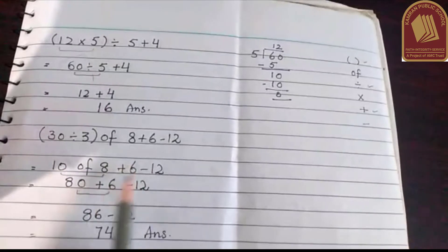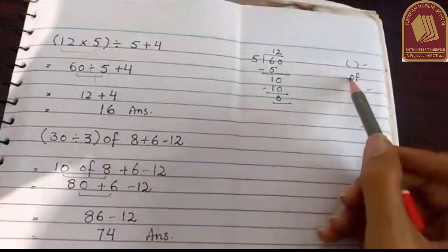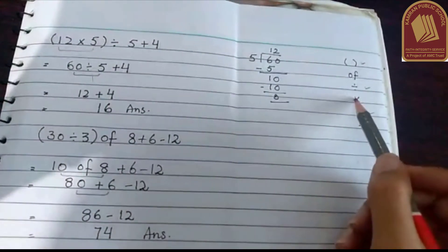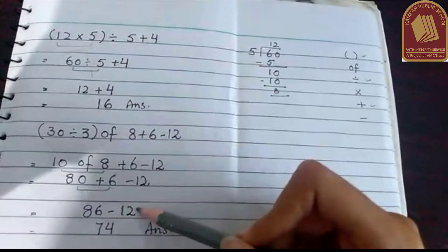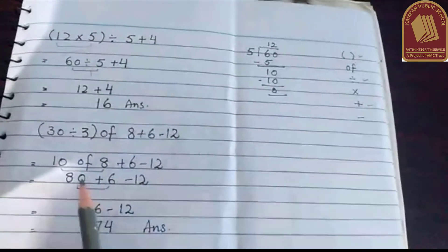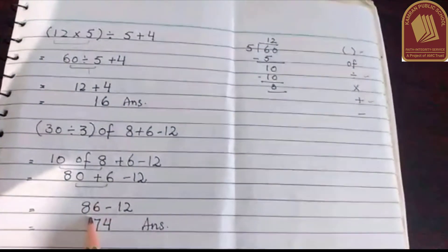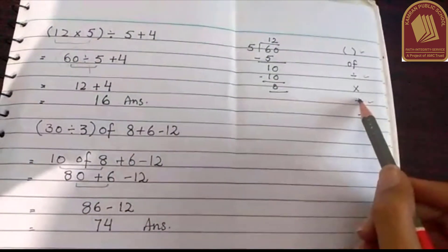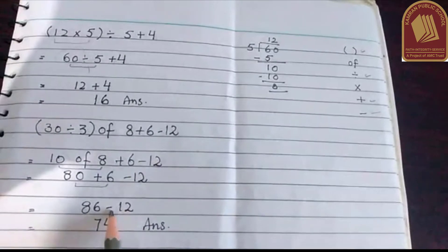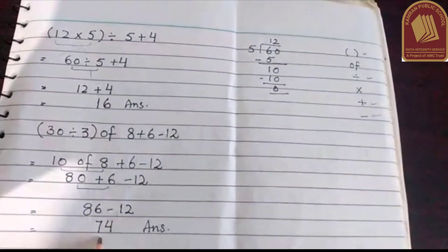Then plus 6 minus 12 remains as it is. After the bracket, I have to do division — there is multiplication here. Then there is addition: we do 80 plus 6 to get 86. After addition, there will be subtraction: 86 minus 12 gives 74 as the answer.